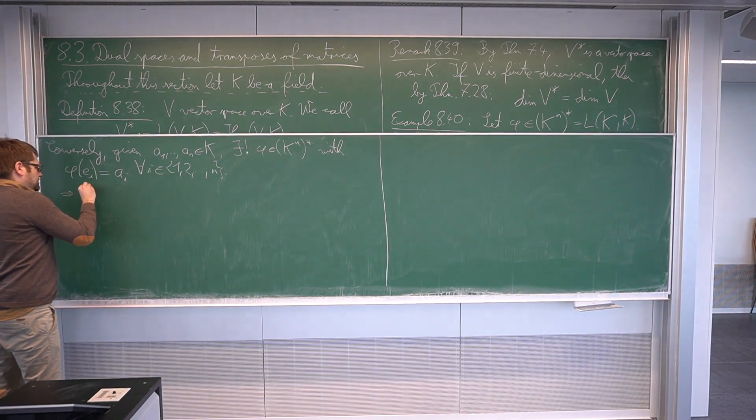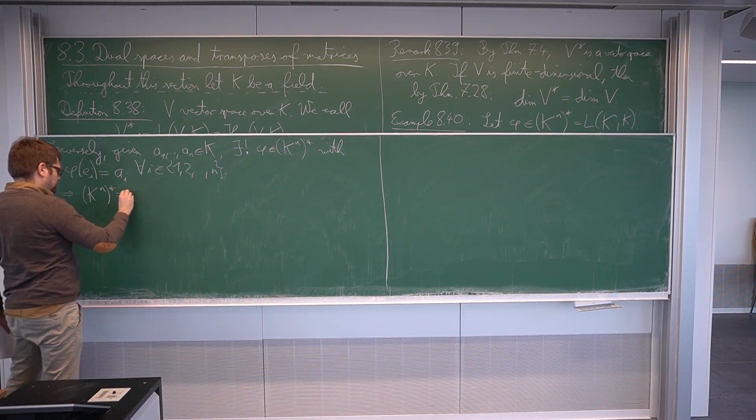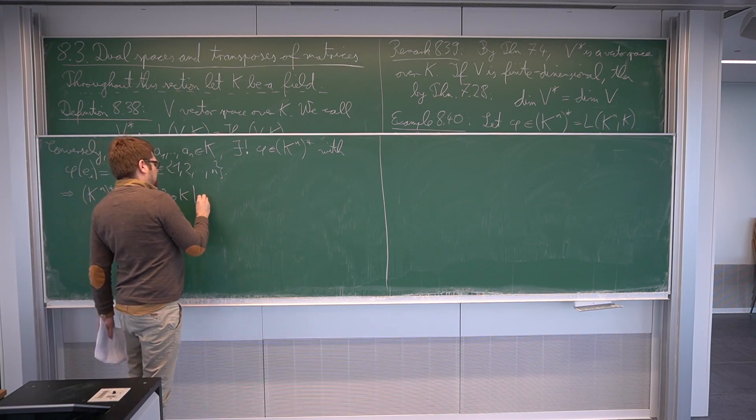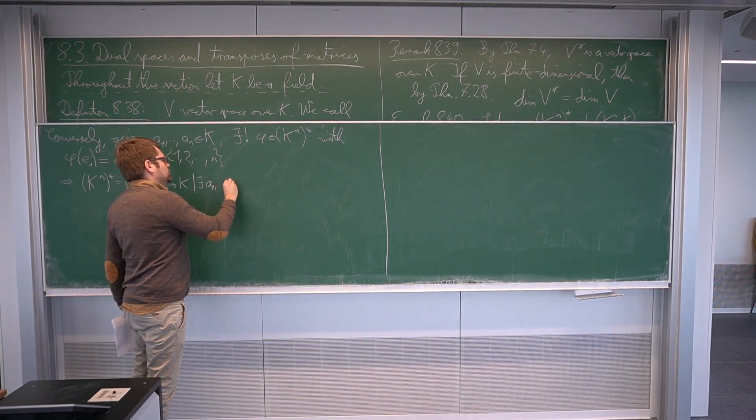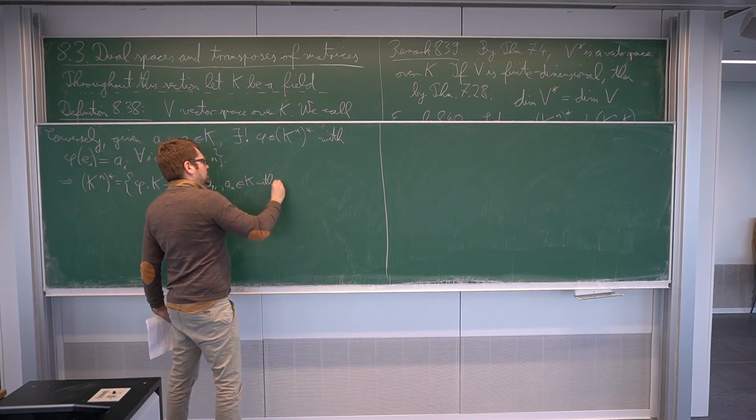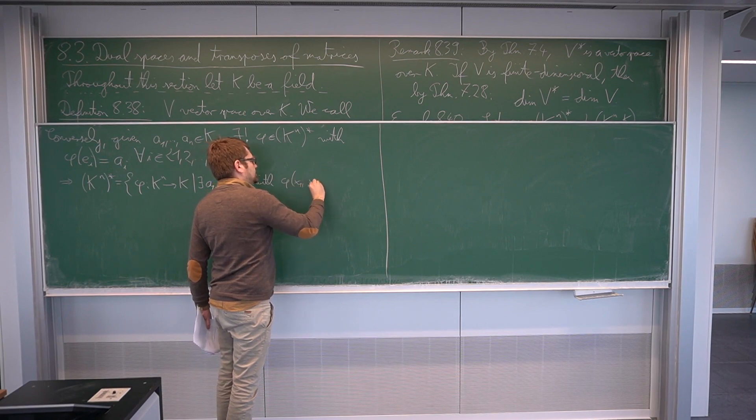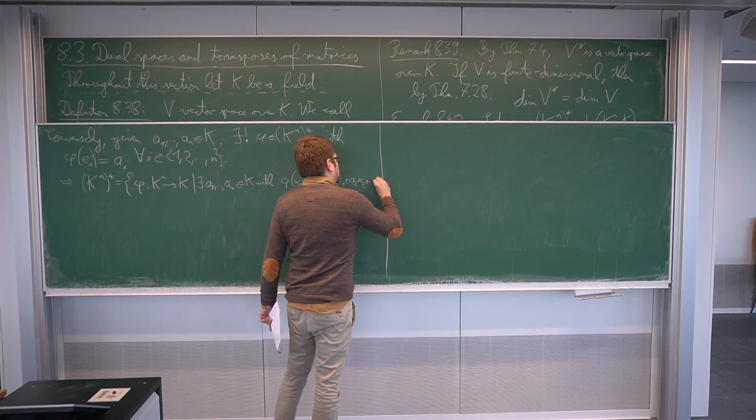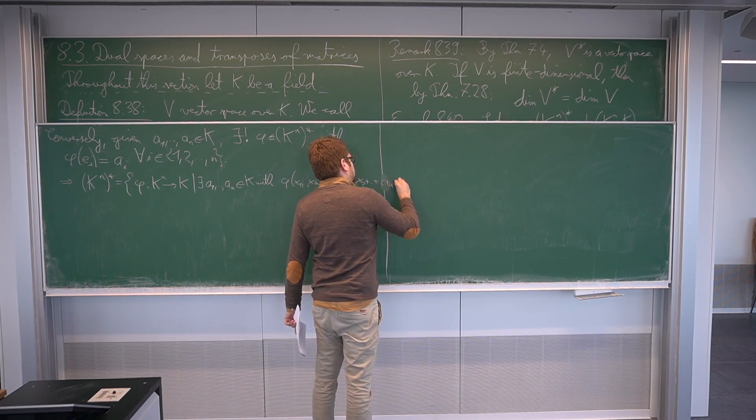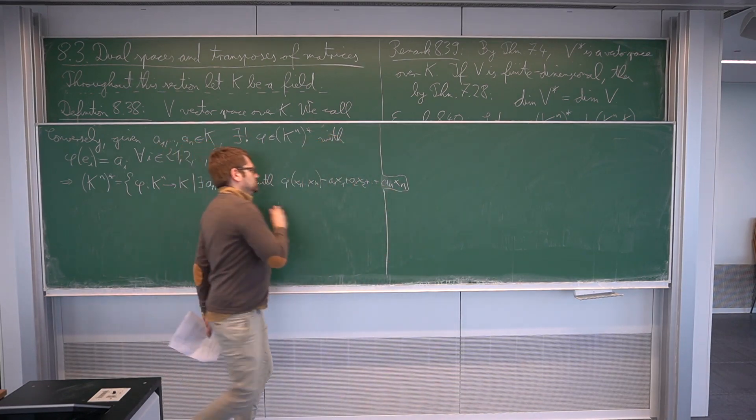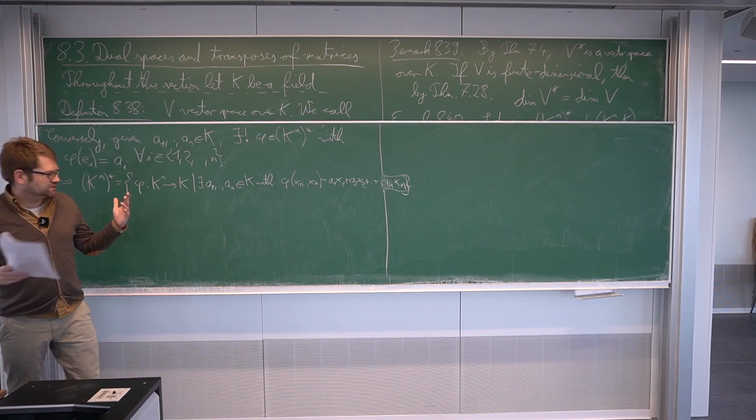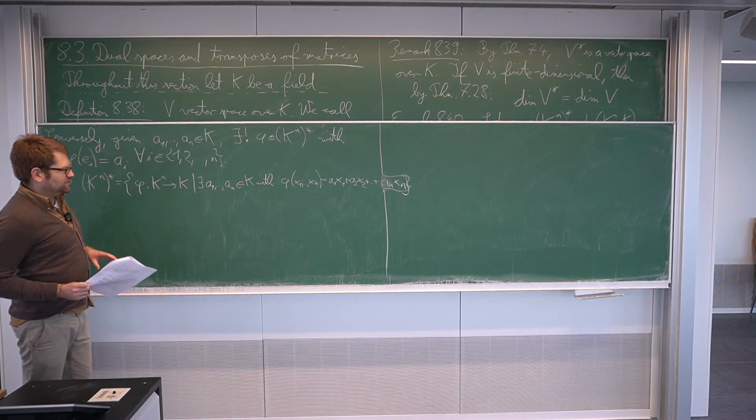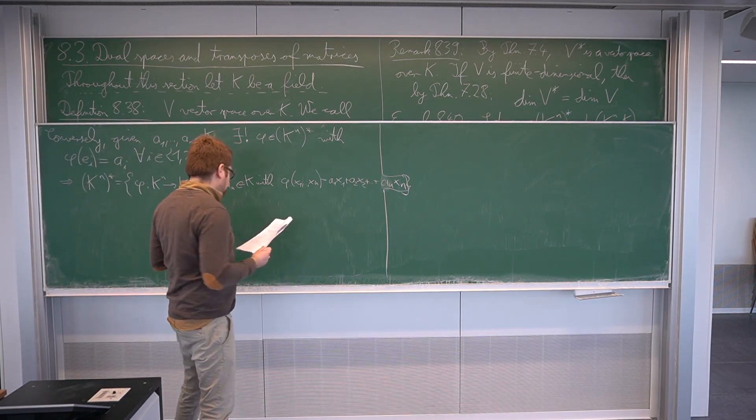Which means the dual space is just the space of all maps of the following form. This is the set of all phi from k to the n to k, such that there are a1 to an in k with phi of x1 to xn is just given as the sum a1 x1 plus a2 x2 and so on, until we achieve a n xn. So in this case, this is really an explicit description of the dual space, all maps of this form.